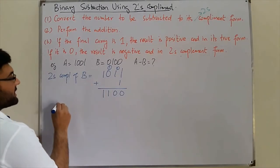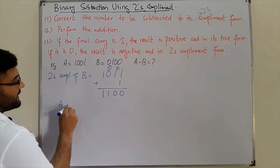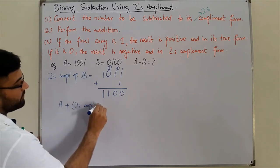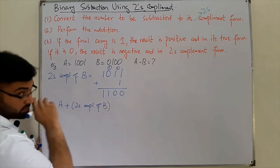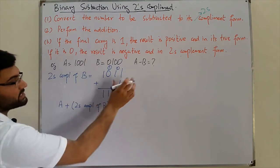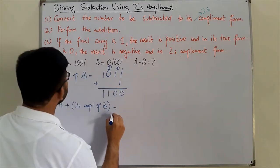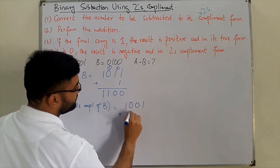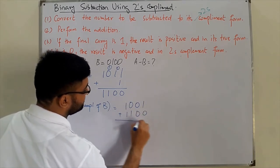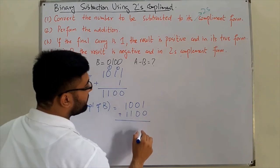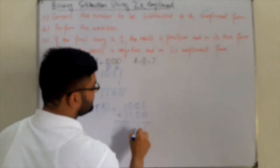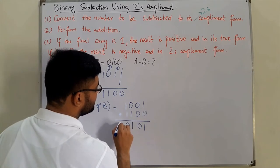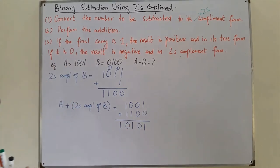For A minus B, we write it as A plus the two's complement of B, which is equivalent to A minus B. So we add 1001 and 1100: one plus zero is one, zero plus zero is zero, zero plus one is one, one plus one is zero with a final carry.